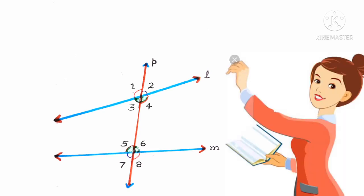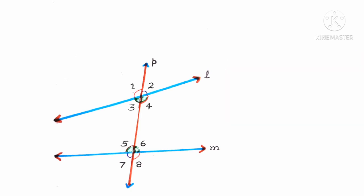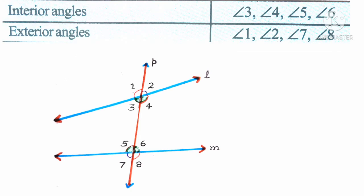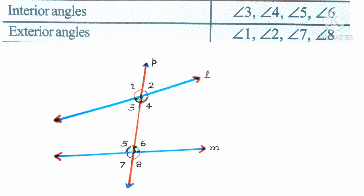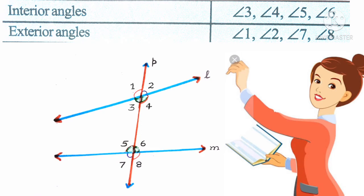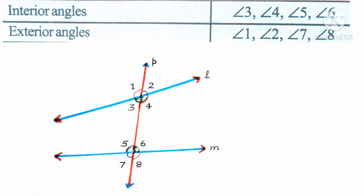These eight angles have their special names. Among these eight angles, the angles 3, 4, 5 and 6 are called interior angles. They are the angles which lie within the two lines L and M. So they are called interior angles.